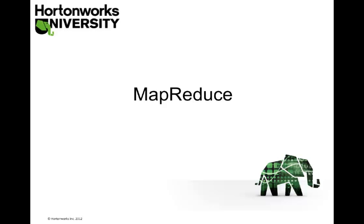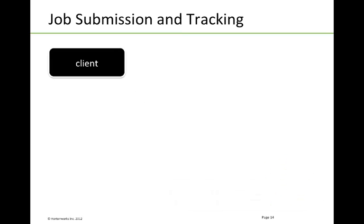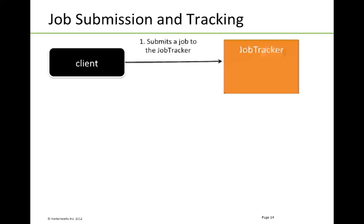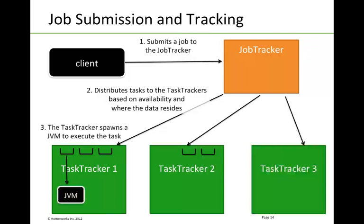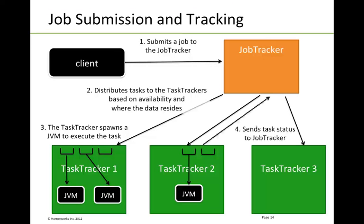Now that we know how data is stored and distributed, let's talk about how analysis is done through the MapReduce framework. A job is submitted by a client to the job tracker. The job tracker then breaks up the job into tasks and distributes those tasks to the task trackers based on the availability of where the data resides. Once that task is distributed, the task tracker on the local data node will launch a Java virtual machine to execute the task, and will periodically send task status back to the job tracker.